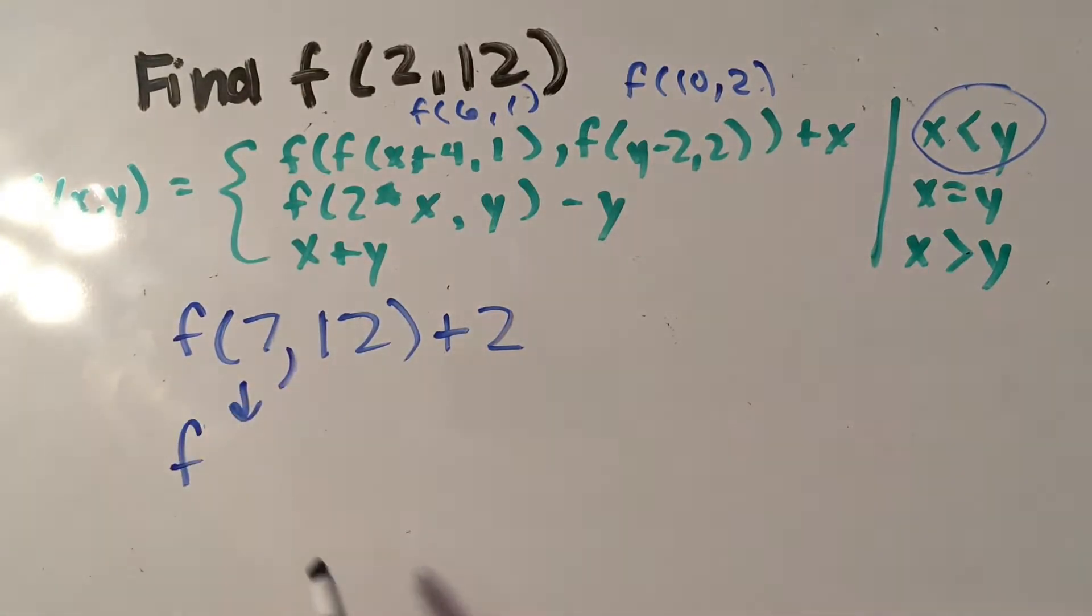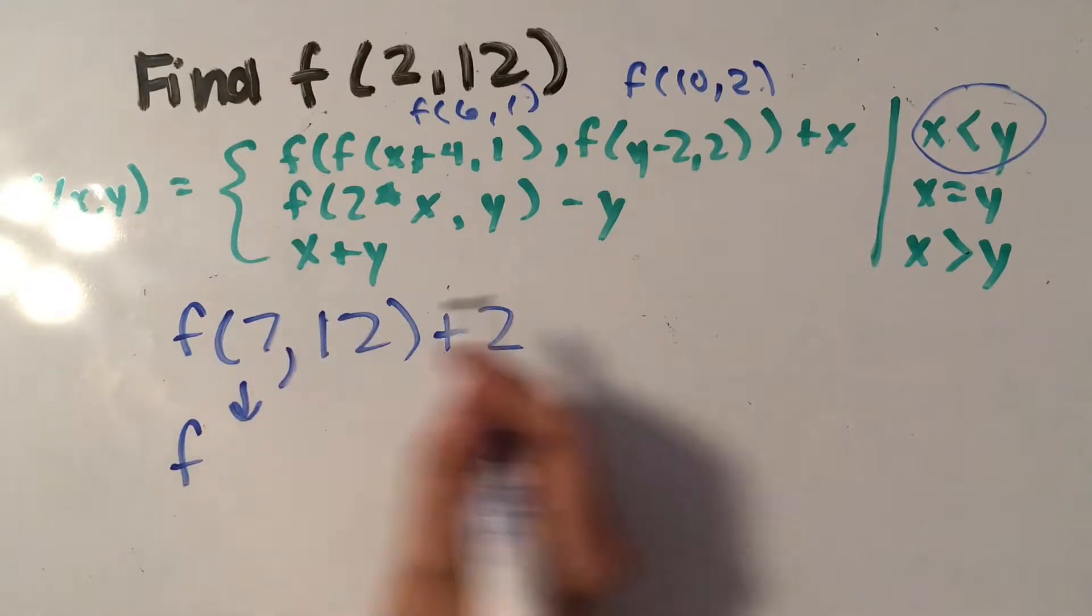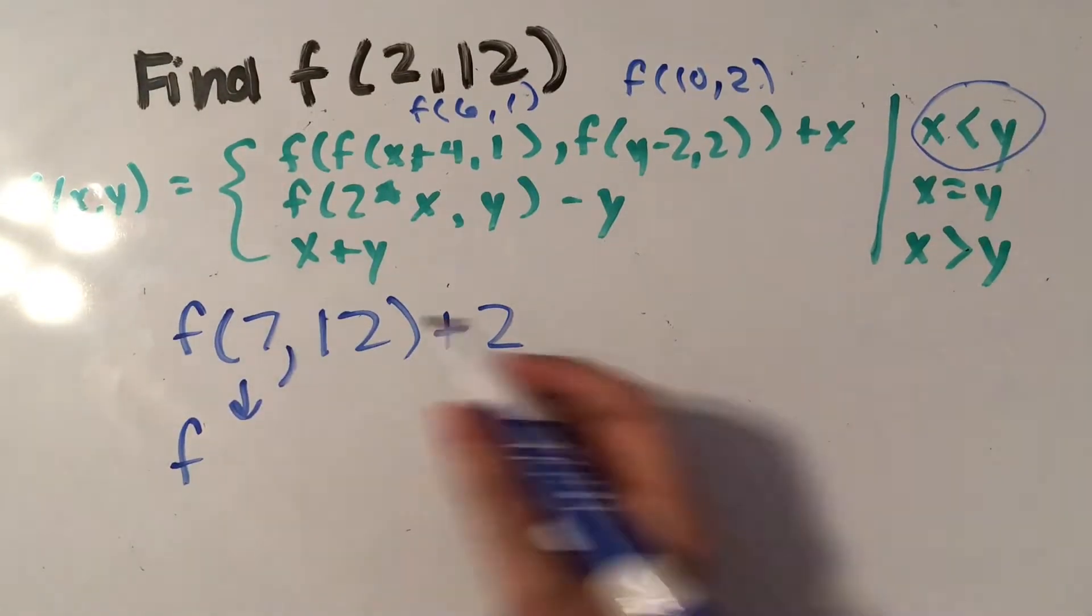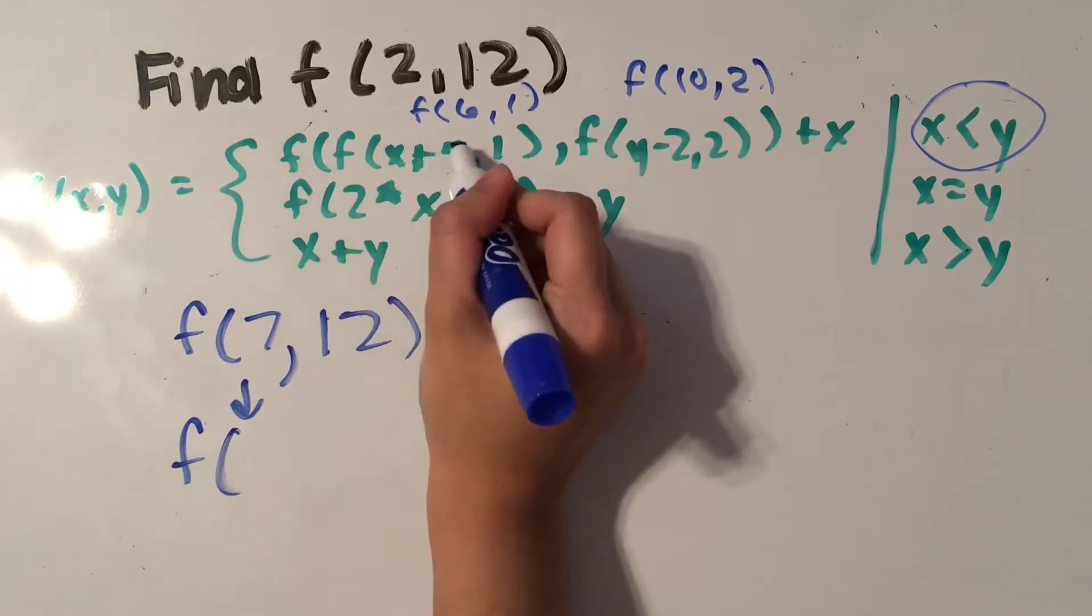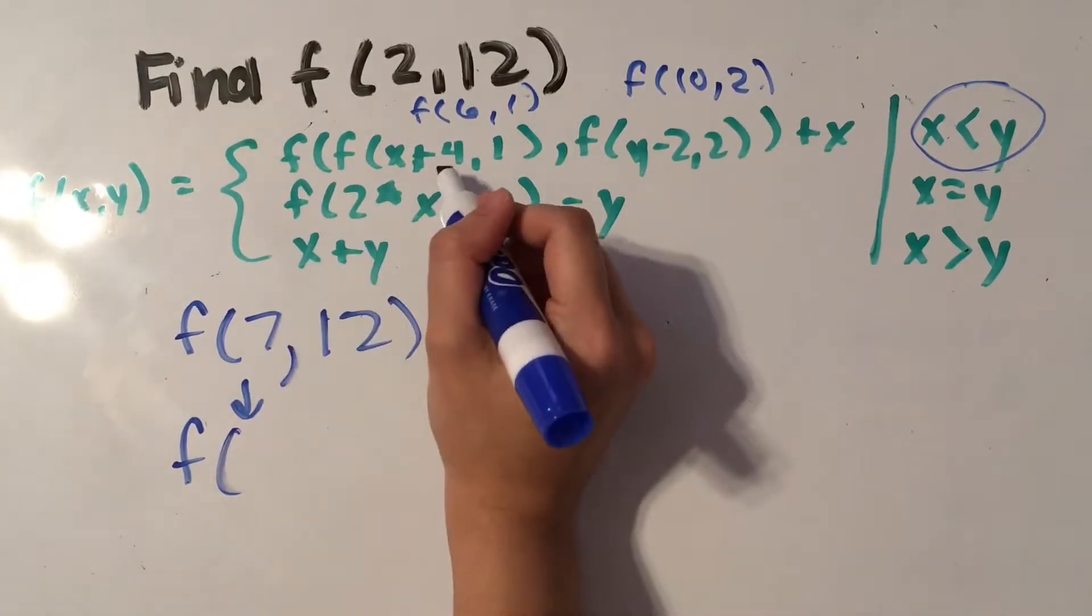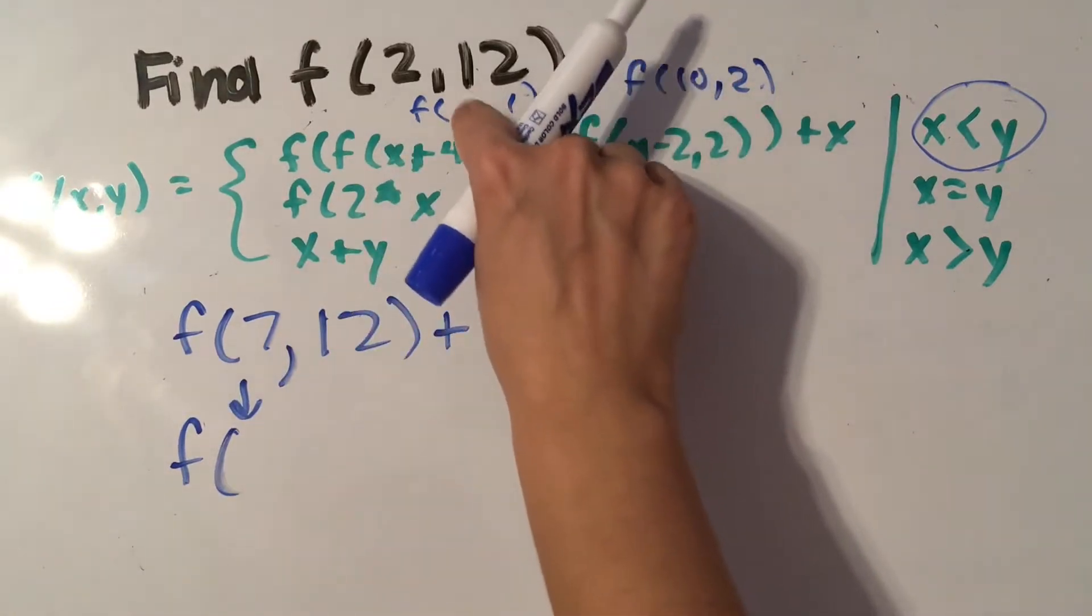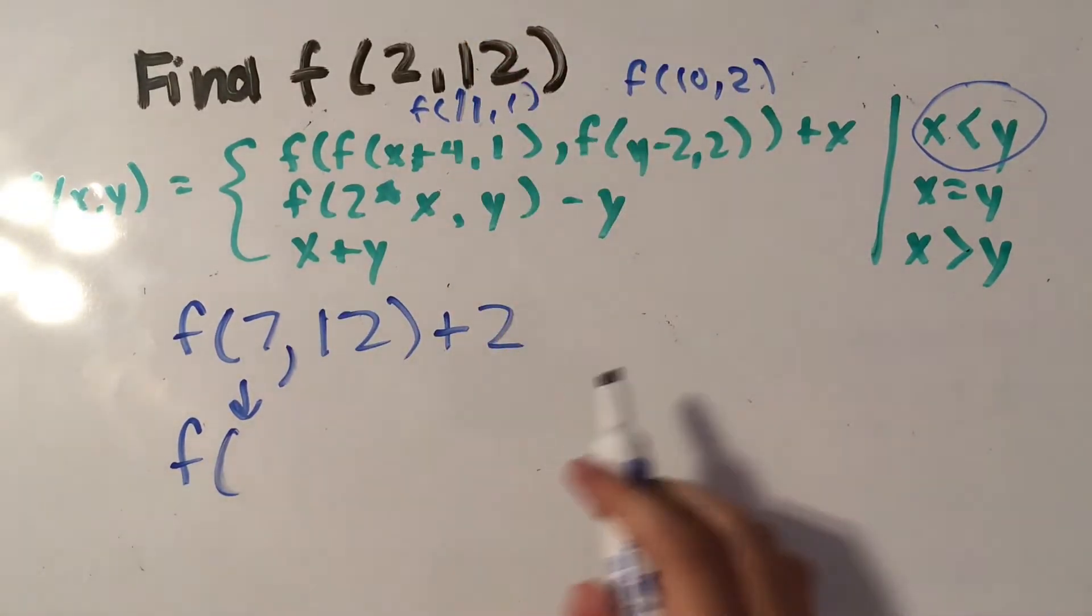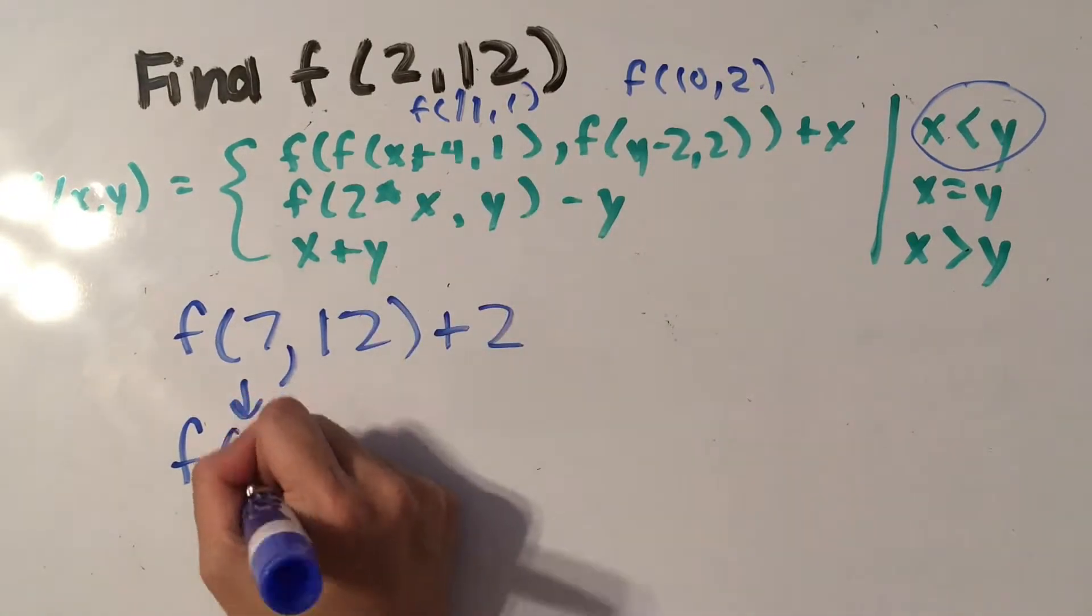And then we have to go through this again because this calls another function in which x is less than y. So we're going to do f of f of x plus 4, which is 7 plus 4, so 11. So that's going to be f of 11 comma 1, and x is greater than y, so we're going to add both 11 and 1 together to get 12.